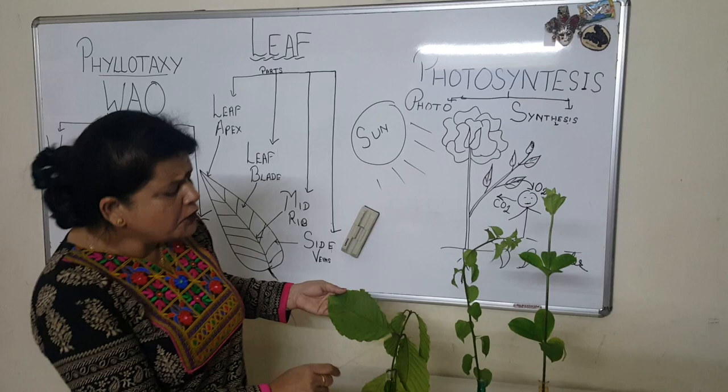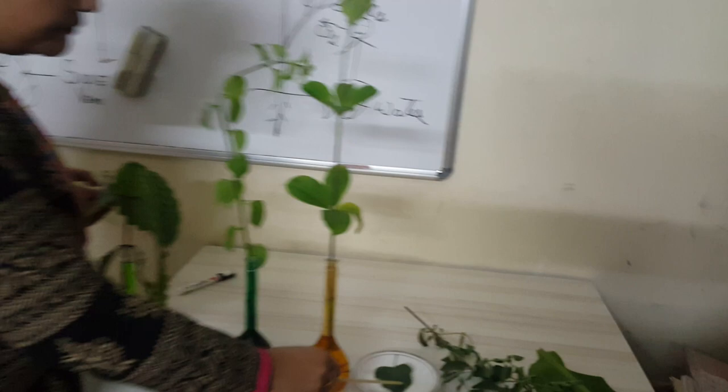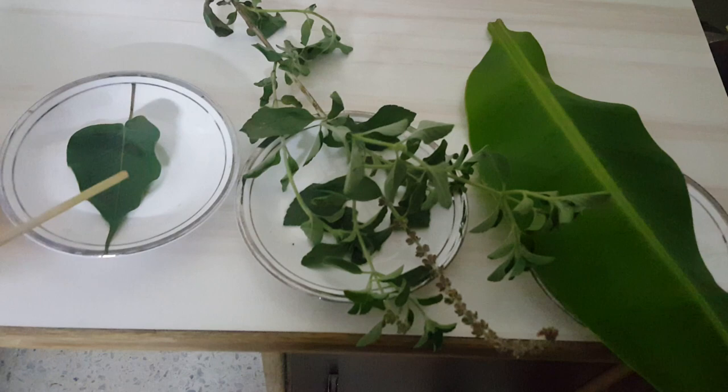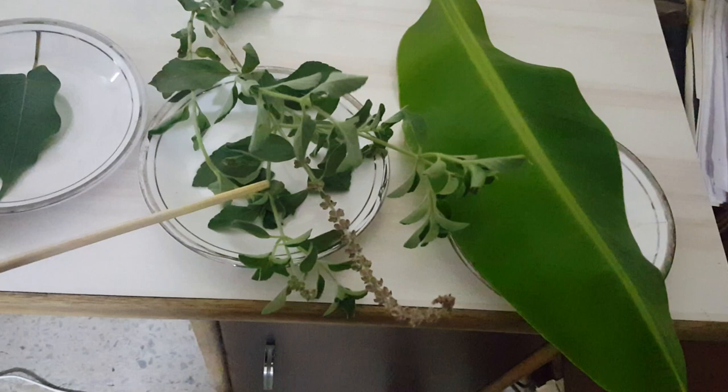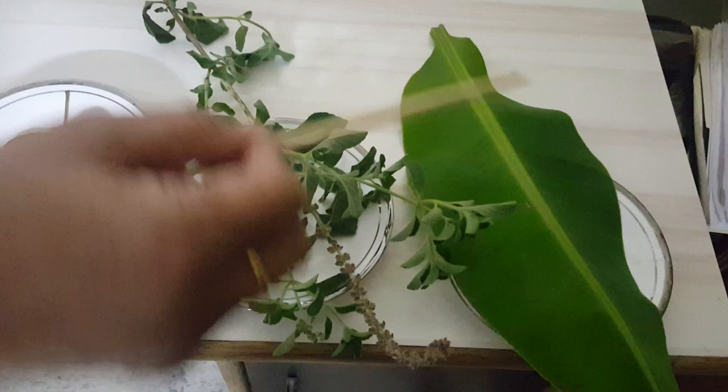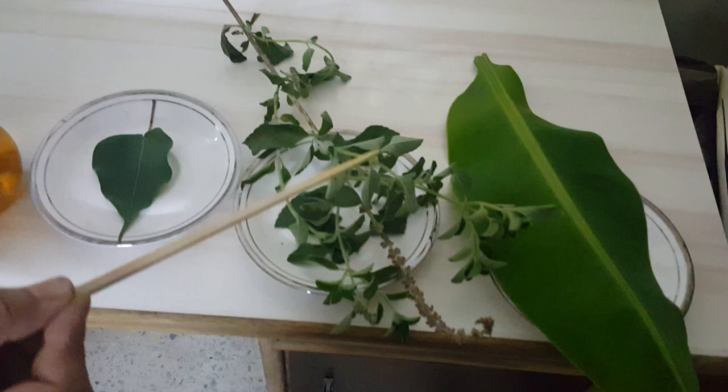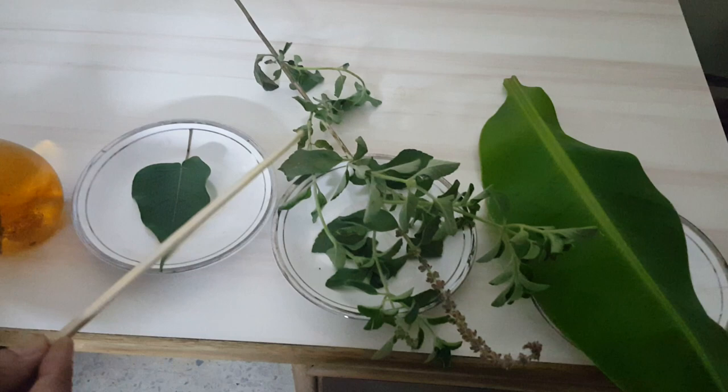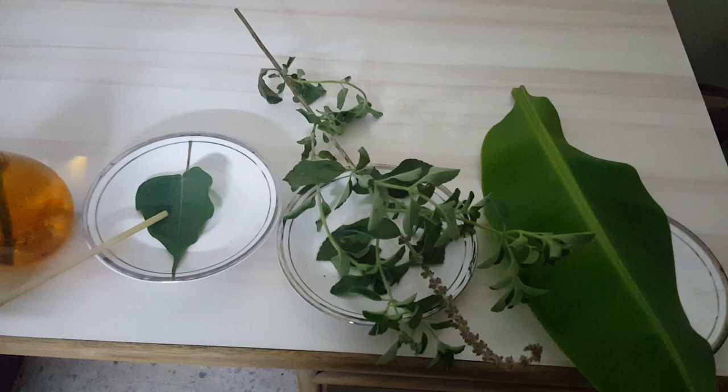Leaves are of various shapes and sizes. Here is the leaf of a peepal tree, which is heart-shaped. Next is the tulsi leaf, which is very tiny and small. The next one is the banana leaf, which is very long and flat. By looking at these leaves, you can identify the plant they came from. Each one — banana, tulsi, and peepal — is very different from the others.